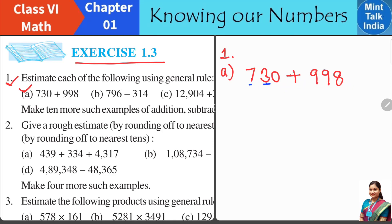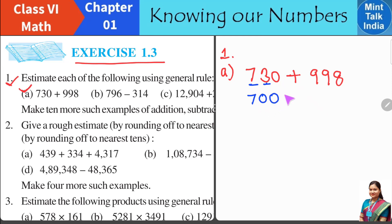Observe the tens place and the hundreds place. This number is 3, which is less than 5. So the digit on the left side will remain as it is — 7 — followed by two zeros. So the number after rounding off becomes 700.